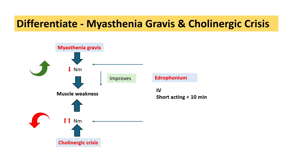In cholinergic crisis there is already continuous stimulation of the neuromuscular junction by acetylcholine; adding edrophonium further increases acetylcholine levels and worsens muscle weakness. This is how we differentiate between myasthenia gravis and cholinergic crisis. Edrophonium is a diagnostic drug, and this test is also called the Tensilon test.